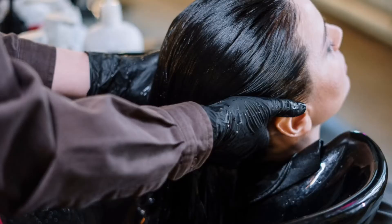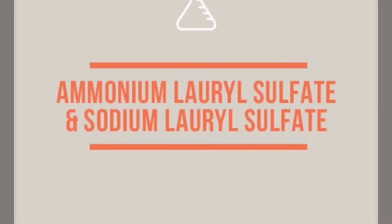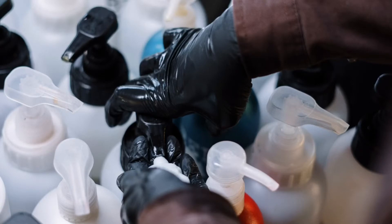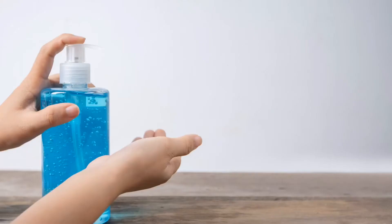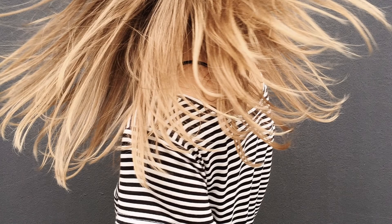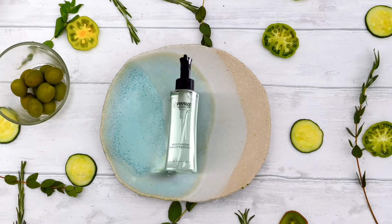There are two detergents commonly found in shampoo: sodium lauryl sulfate (SLS) and ammonium lauryl sulfate (ALS). These two detergents are commonly used in shampoo and are mainly suited for oily scalp and hair.